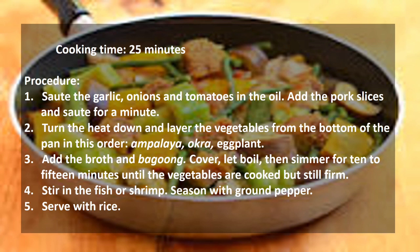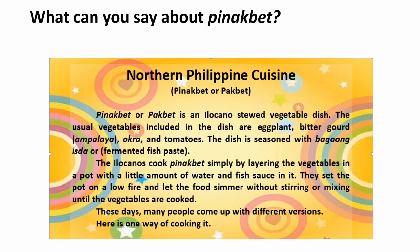Procedure: Saute the garlic, onions, and tomatoes in the oil. Add the pork slices and saute for a minute. Turn the heat down and layer the vegetables from the bottom of the pan in this order. Stir in the fish or shrimp, season with ground pepper, and serve with rice.